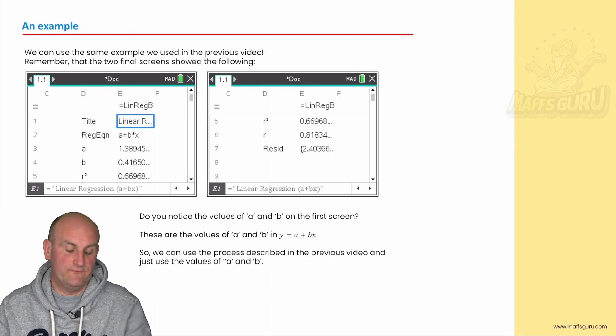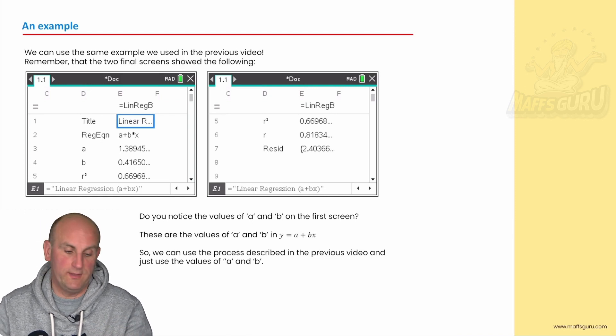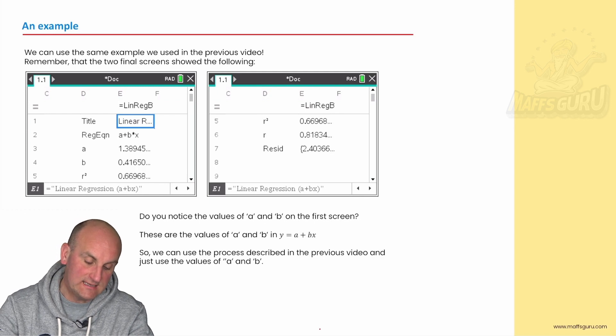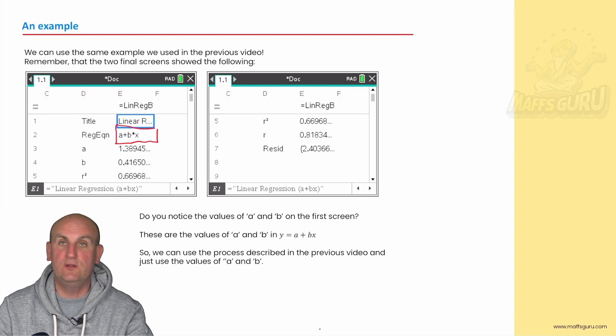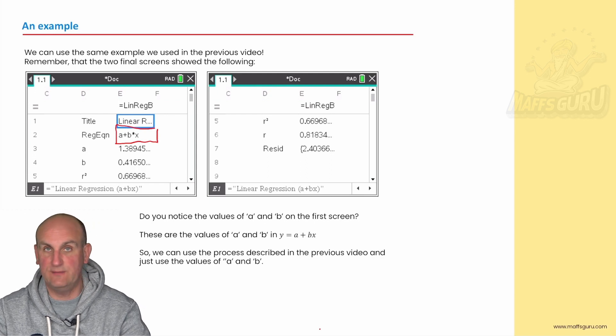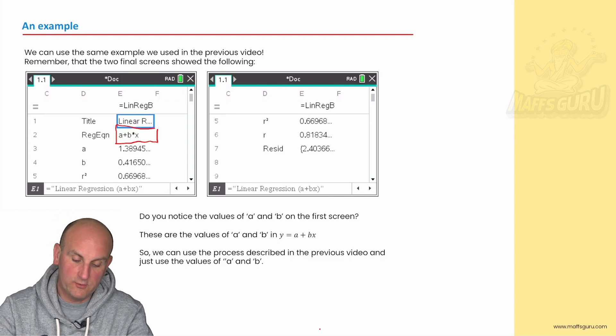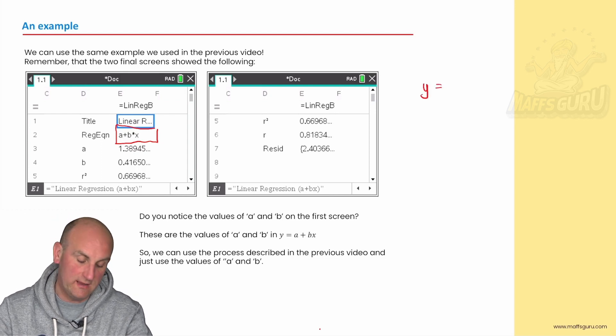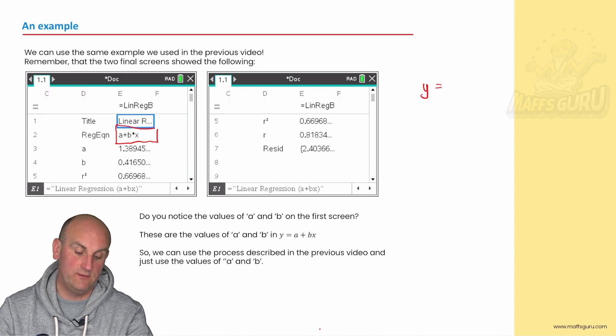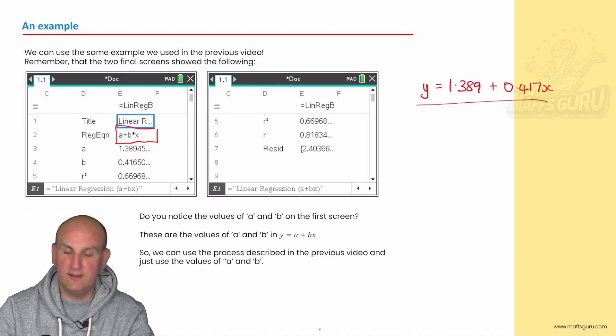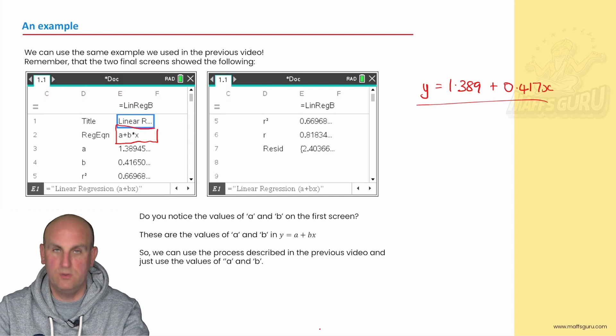So, if we use that information from our previous video or the one that I started here, all I've done is taken the screenshots. And what we notice is, here is my calculator saying, I'm going to give you the value of a, my intercept, and my value of b. Now, sadly, a lot of people stuff this up because then they go, well, okay, then I know my equation becomes y is equal to, my a value is 1.38945. So, 1.389 plus my b value of 0.417x. And they go away and they go, yay, I've done it. No, you haven't. Why?